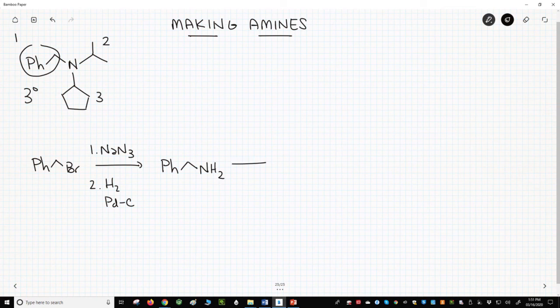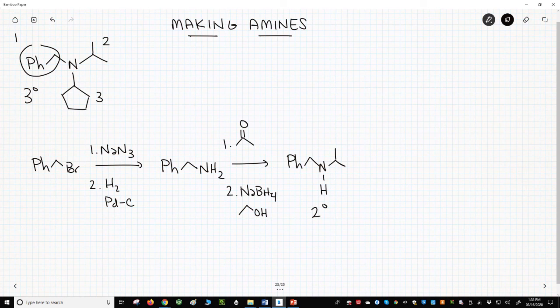We can react our primary amine with the correct ketone and reduce the resulting imine with sodium borohydride and an alcohol like ethanol to form our secondary amine.